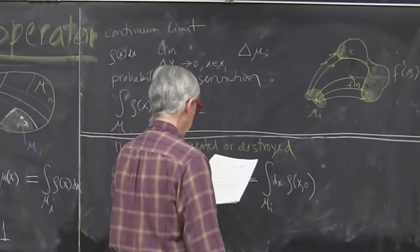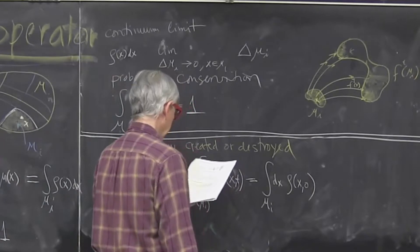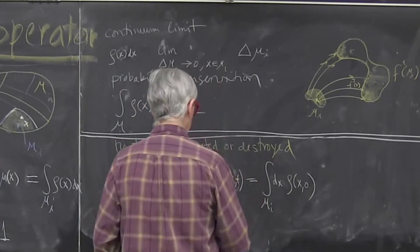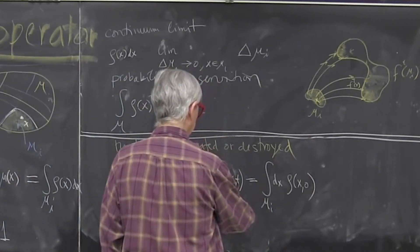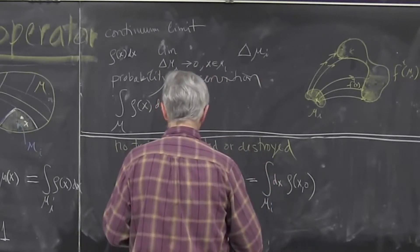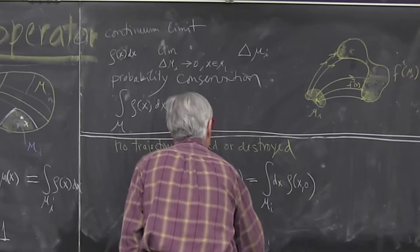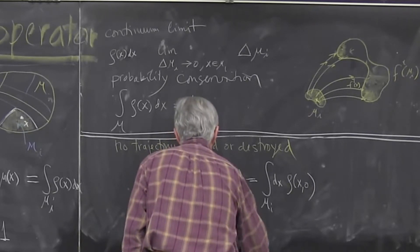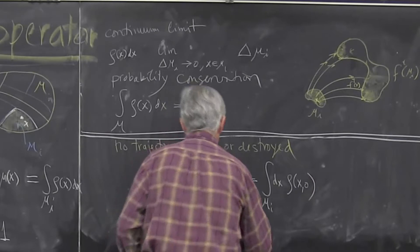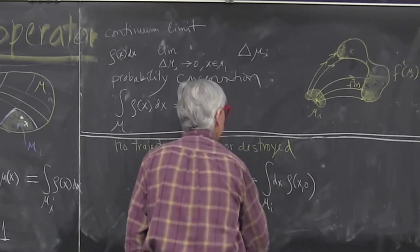Now if flow is invertible, I can actually relate this density dynamically and I can write that this is an integral dx zero of the initial volume. This volume here